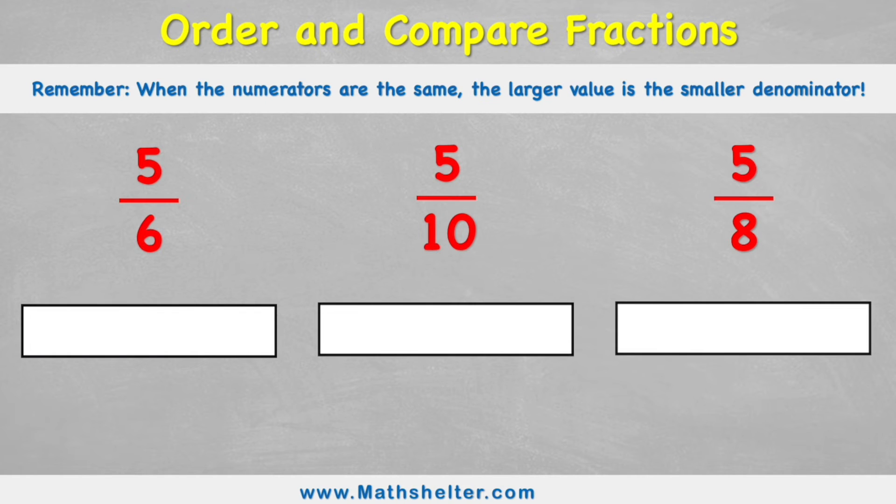So the first thing we need to understand is what is a numerator? Well, the numerator is the number that's on the top of a fraction. So this five would be my numerator. And then the number on the bottom, this number is called the denominator.